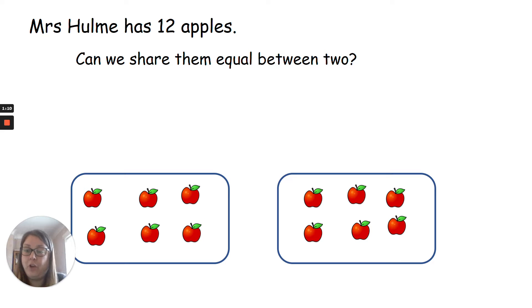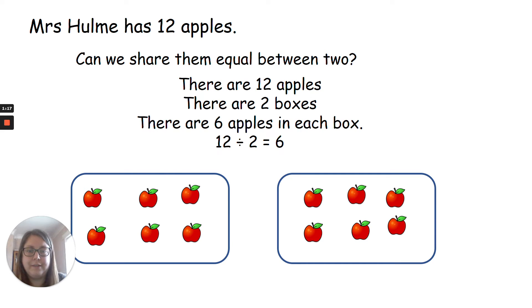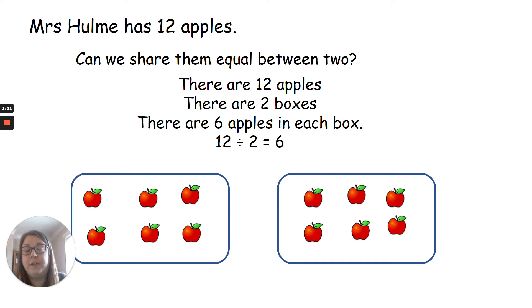We haven't got any apples left over and we've got six apples in each group. Therefore, 12 shared between two is six. Well done. So 12 apples, two boxes — we can write that as 12 divided by two equals six.